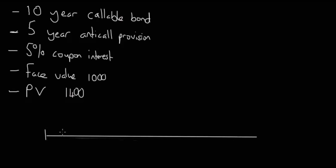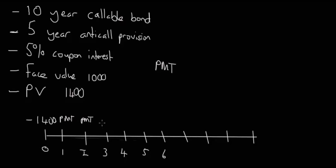Let's put down a line for the 10-year timeline: 0, 1, 2, 3, 4, 5, 6, 7, 8, 9, and 10. Let's say the present value is 1400, being laid out today. There's 5% coupon interest and this line is made up of PMTs every single year. The coupon interest payment is 5% of the face value, which is 1000, and that equals 50. So that payment is going to be 50 each year. The face value is 1000 at the end.